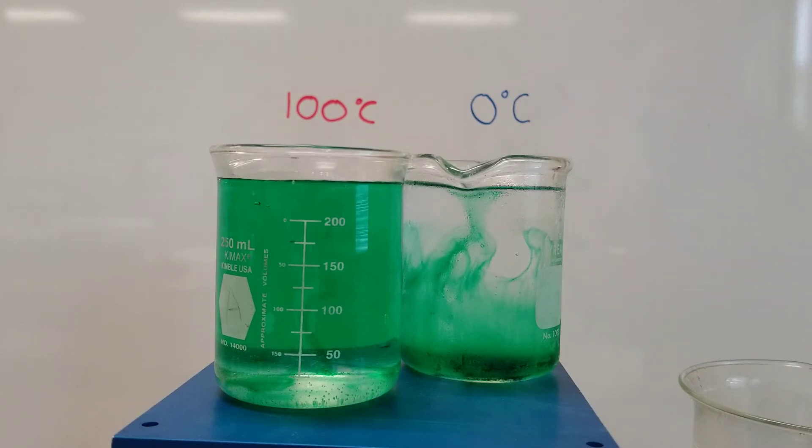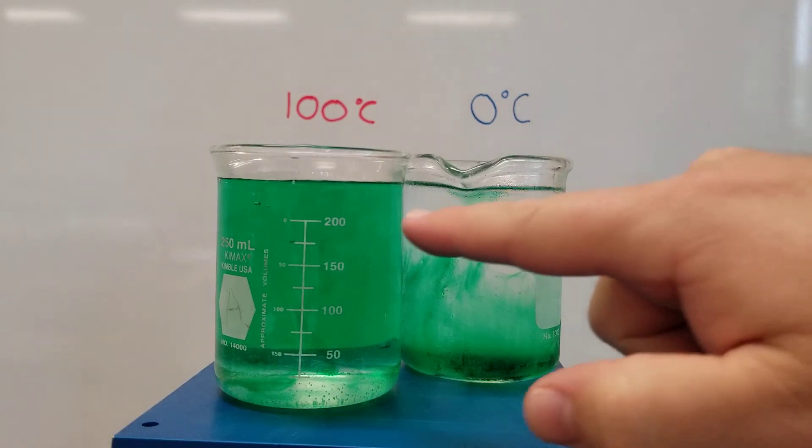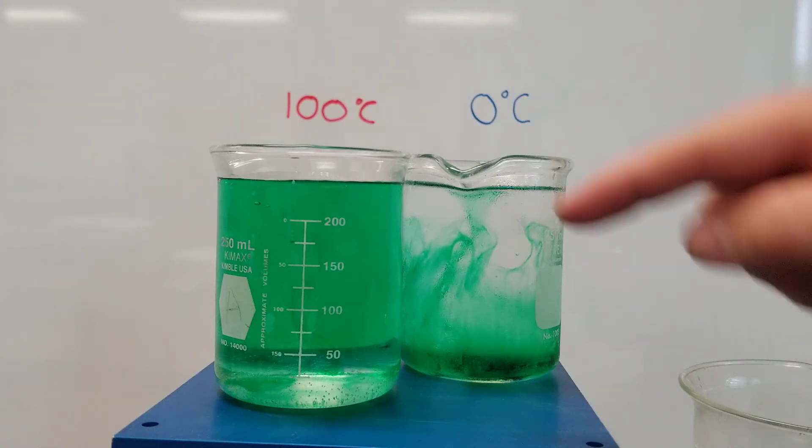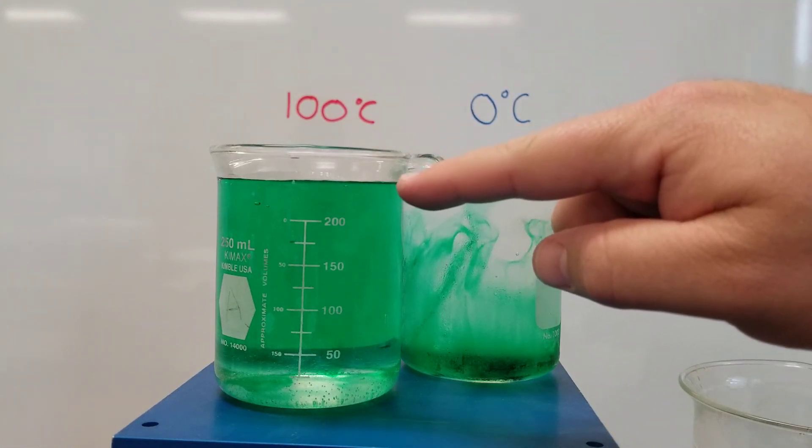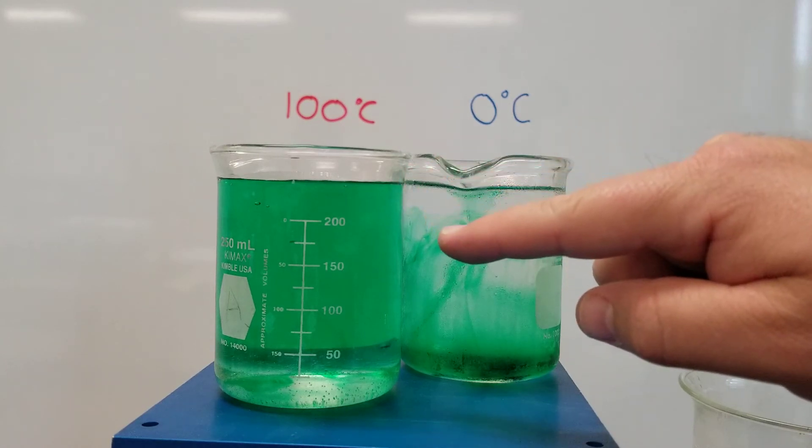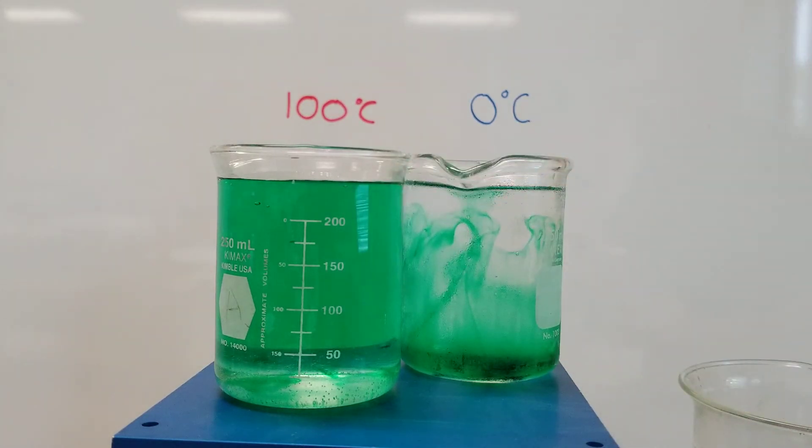And so the first thing to understand is that the motion of the food coloring is determined by the motion of the water inside the beaker. So the little water molecules in here are moving around, they're jostling that food coloring, and that's what makes the food coloring move through the beaker.